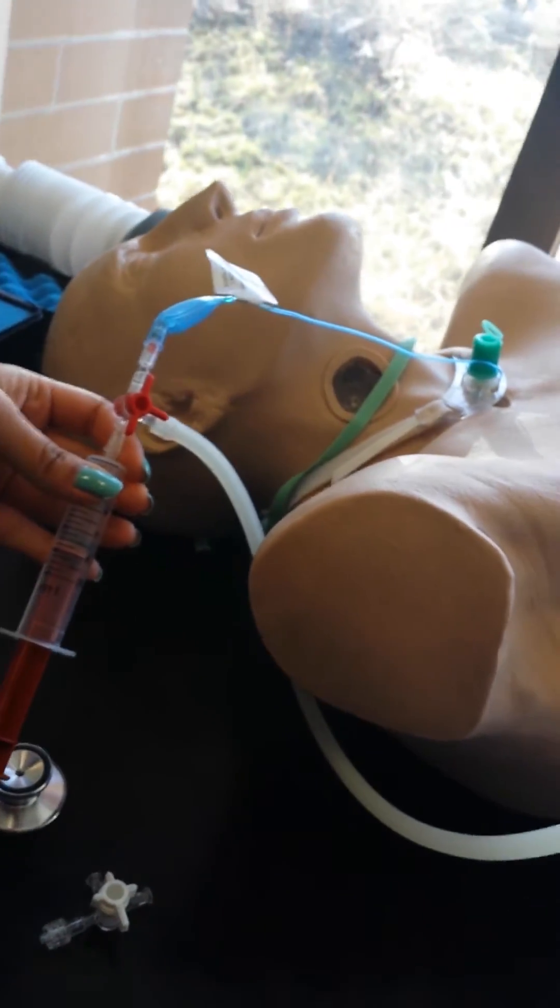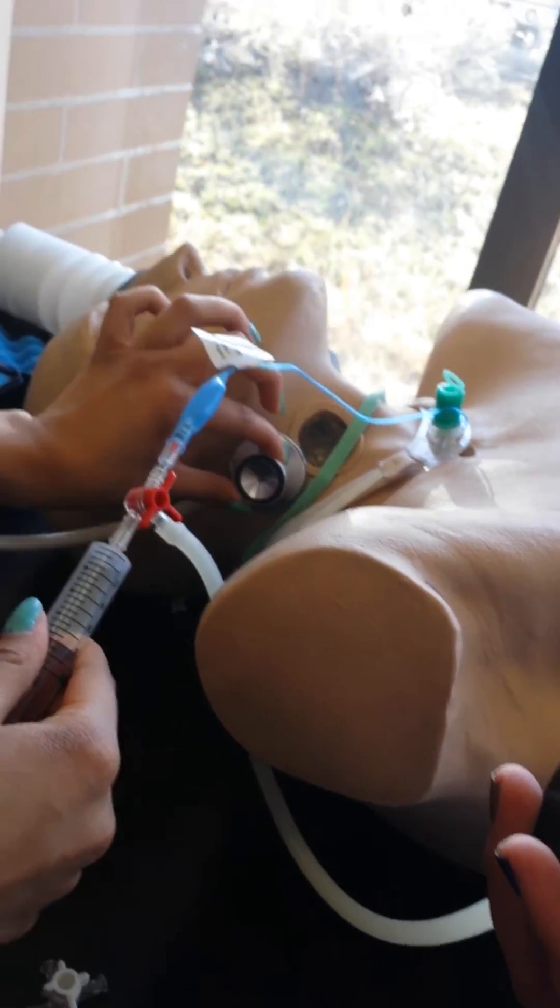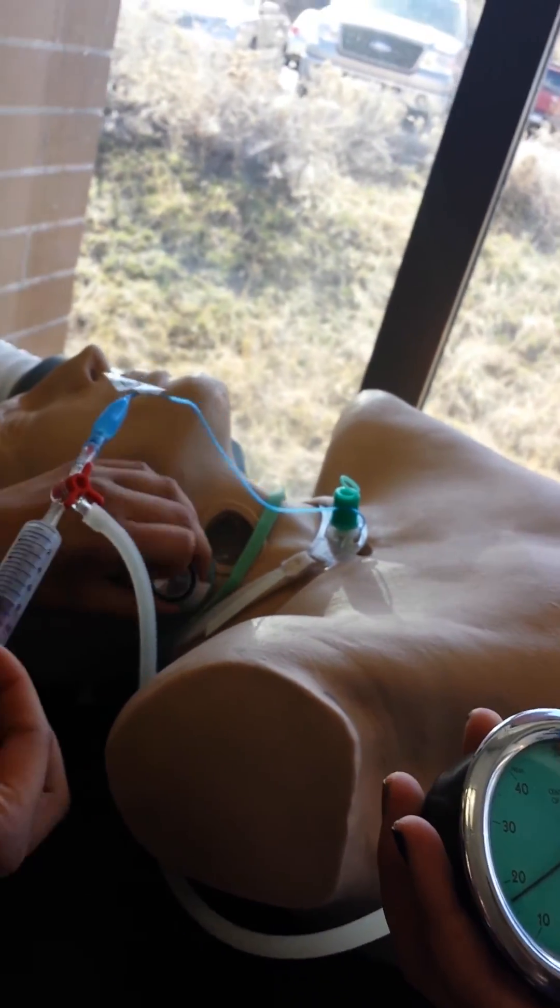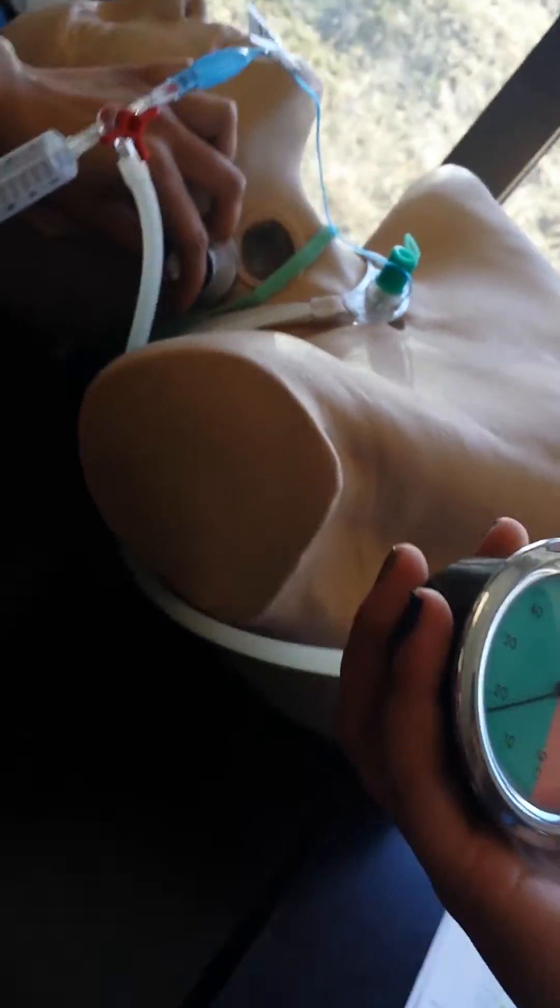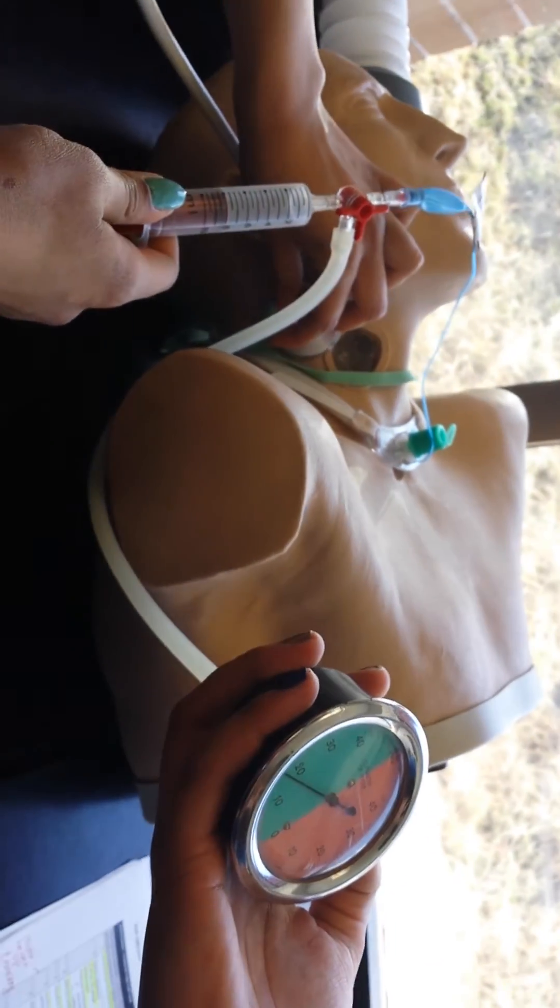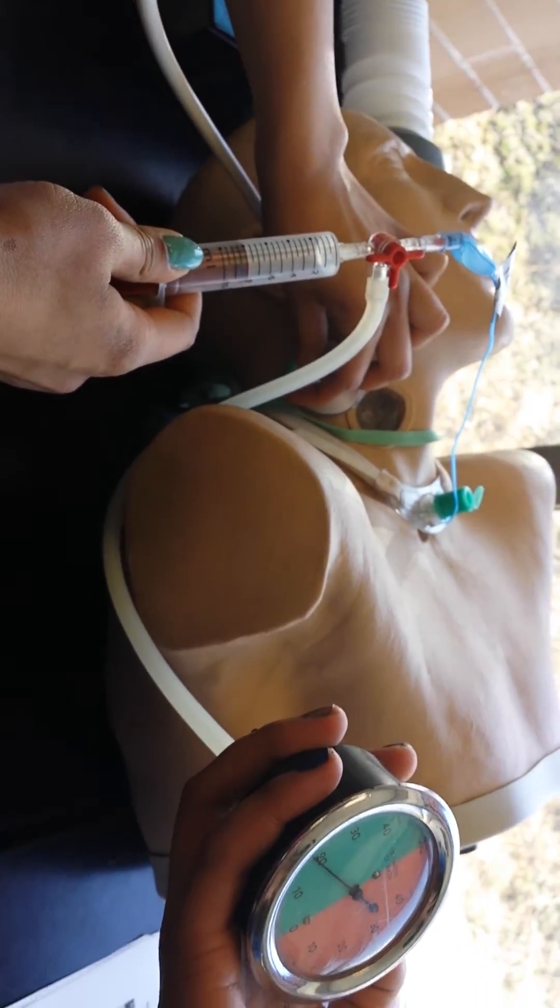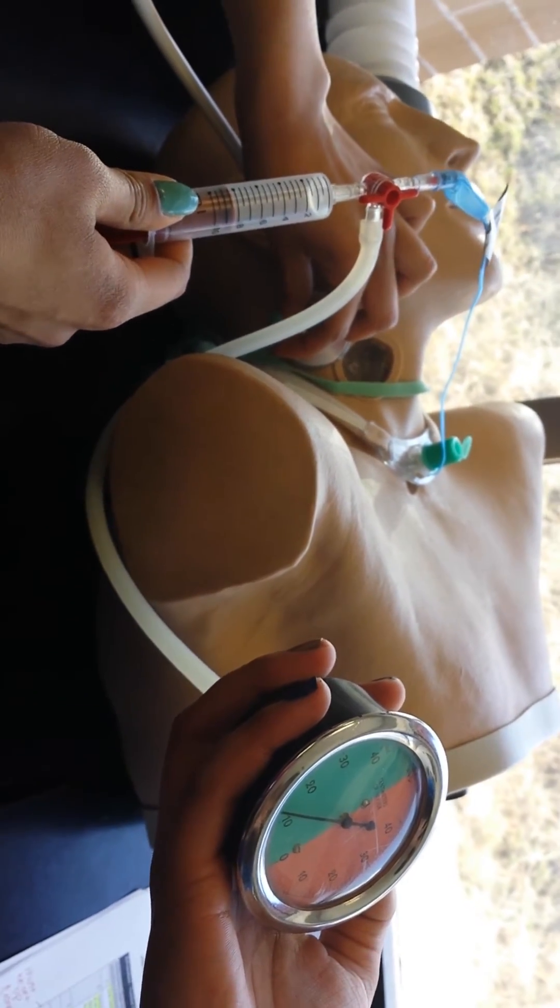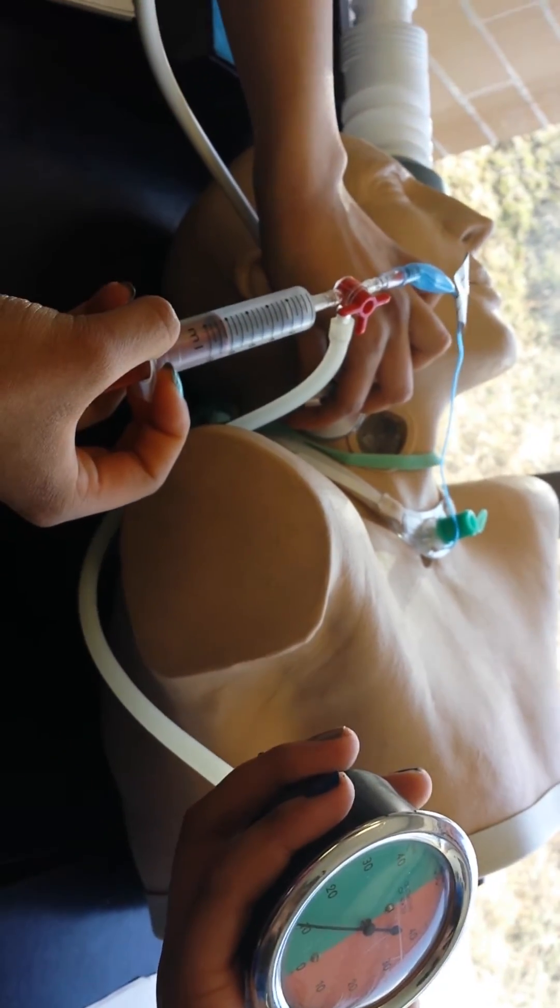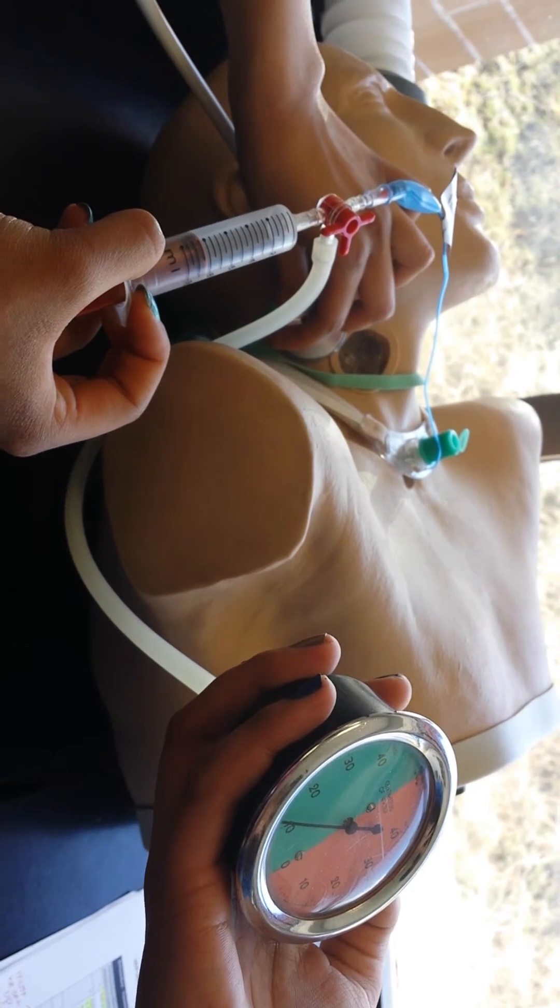So now you're going to have to take your stethoscope and you're going to put it on there. And at this time someone's going to be bagging and then they're going to tell you like loud noise, not loud noise. So you're going to start pulling the pressure out. So it's going to be like no noise, loud noise. And then at that point you're going to start putting pressure back in and you're going to make it go up.